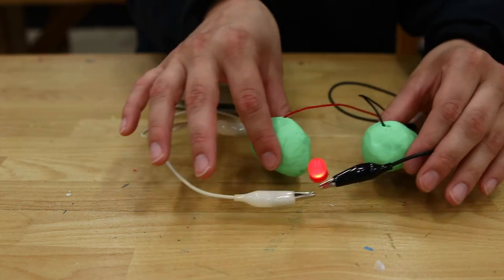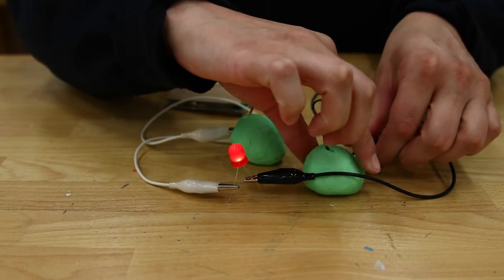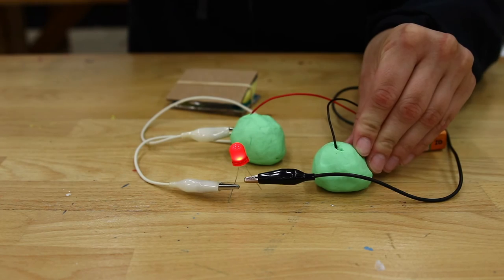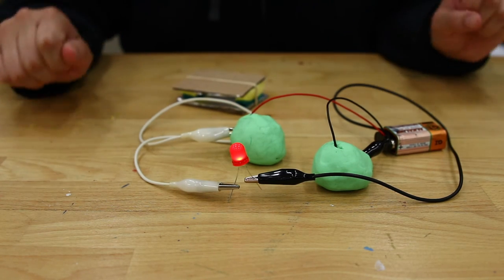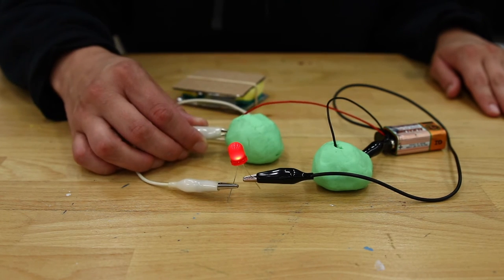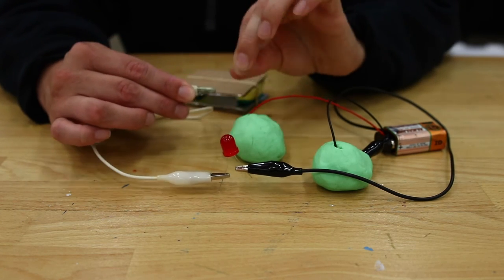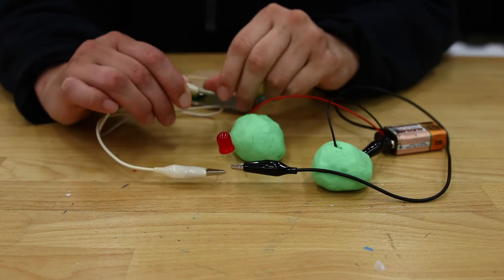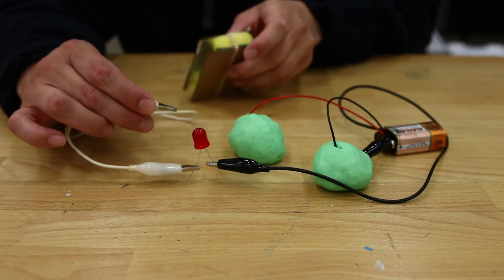Now we're going to bring back our circuit. Make sure that everything still works and your LED turns on. Then you're going to remove one of the alligator clips from the Play-Doh. This breaks your circuit and will turn off your LED. Clean off the metal end of the clip to make sure that there's no excess Play-Doh on the inside or outside of the clip.